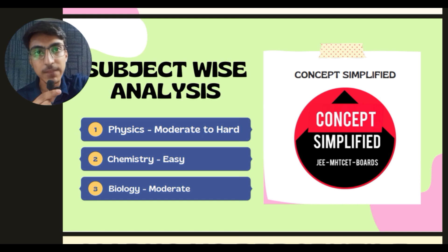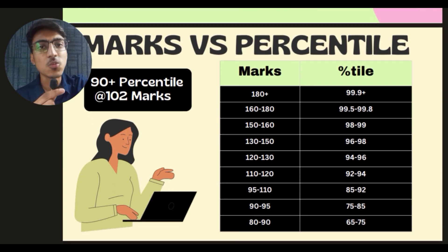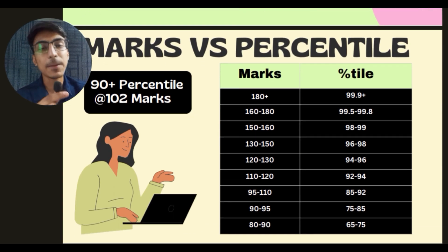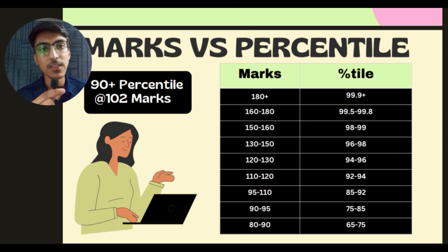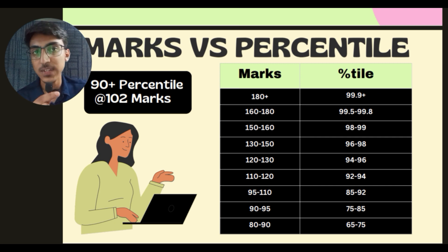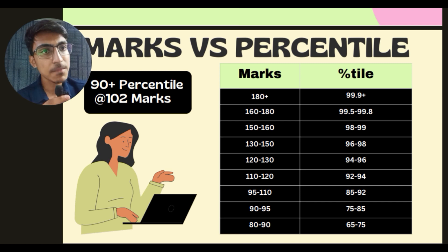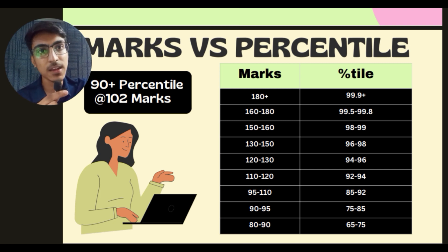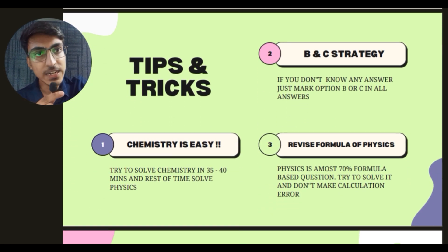Marks versus percentile: paper ka level moderate tha - na easy na difficult, exactly moderate. Hum expect kar rahe hain ki agar aapke 102 marks aa rahe hain, to aapka 90 plus percentile aaram se ban jayega. Marks versus percentile aapke screen pe hai - plus minus one percentile ka variation rahega. 102 ya usse zyada marks pe 90 plus percentile assured hai.